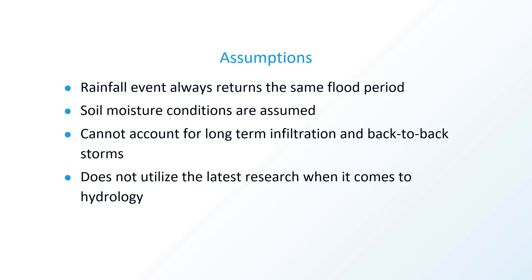There are a few assumptions: the rainfall event always returns the same flood. Every rainfall event of the same intensity on that site is always going to return the same flood. This is not exactly what happens in the real world, because previous events always modify runoff based on soil saturation and other conditions. But for the rational method, we keep it simple to get an estimate. Soil moisture conditions are assumed, and we can't account for long-term infiltration or back-to-back storms. The latest research shows continuous simulation is much more accurate, but the rational method is simple and widely taught.